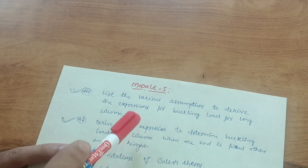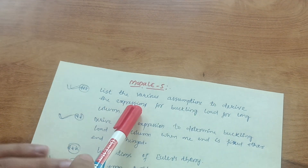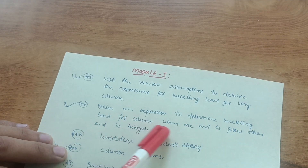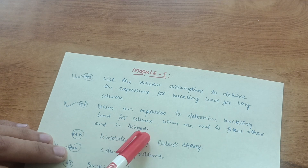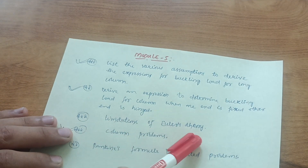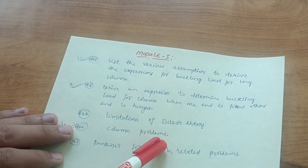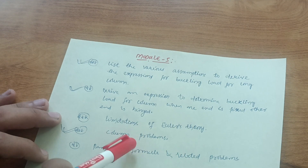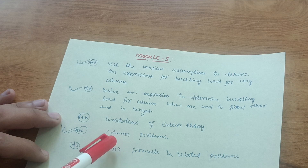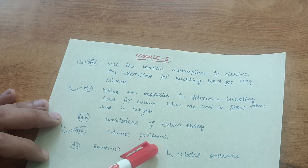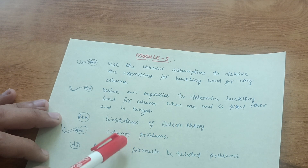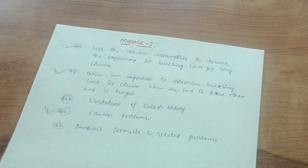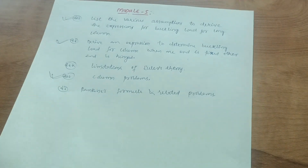In Module 5, cover derivations such as: list the various assumptions to derive the expression for buckling load for a long column; derive an expression to determine buckling load for a column when one end is fixed and the other end is hinged; and the limitations of Euler's theory. Then go through column problems — only the easier ones. Also cover Rankine's formula-related problems. Module 5 is a lengthy module, so focus on simpler problems.